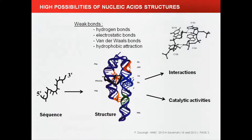When I talk about aptamers, I would like to talk about nucleic acid aptamers, not peptide aptamers, because sometimes it's confused. Nucleic acids are not only a single strand, unstructured — they have a very rich structure because they can make hydrogen bonds, electrostatic bonds, van der Waals interactions, and hydrophobic interactions. This structure of nucleic acids is used in cells to make interactions with proteins, small compounds, and also catalytic activities. You have to remember that the ribosome is 80% RNA in cells, and it carries out catalytic activities.